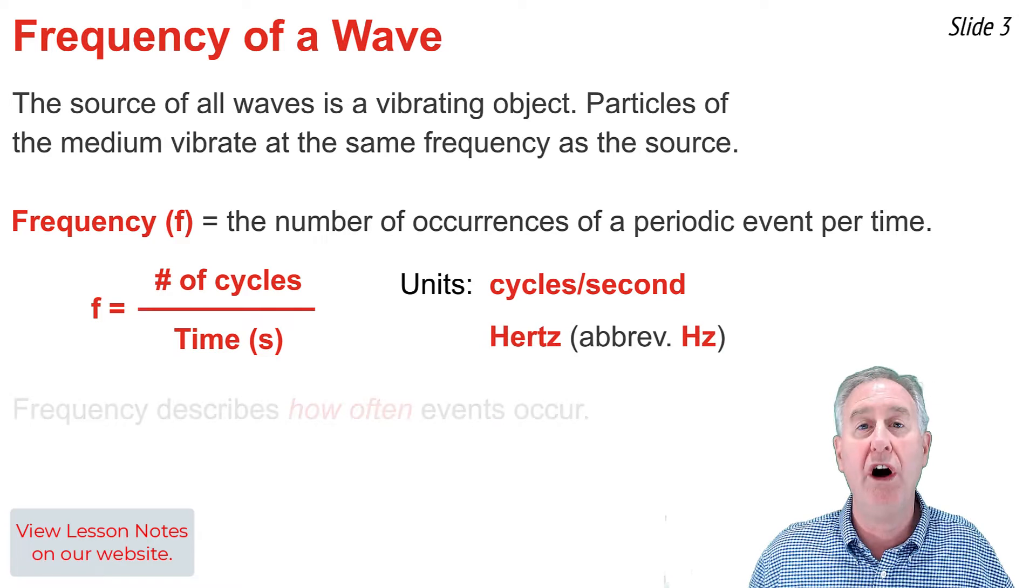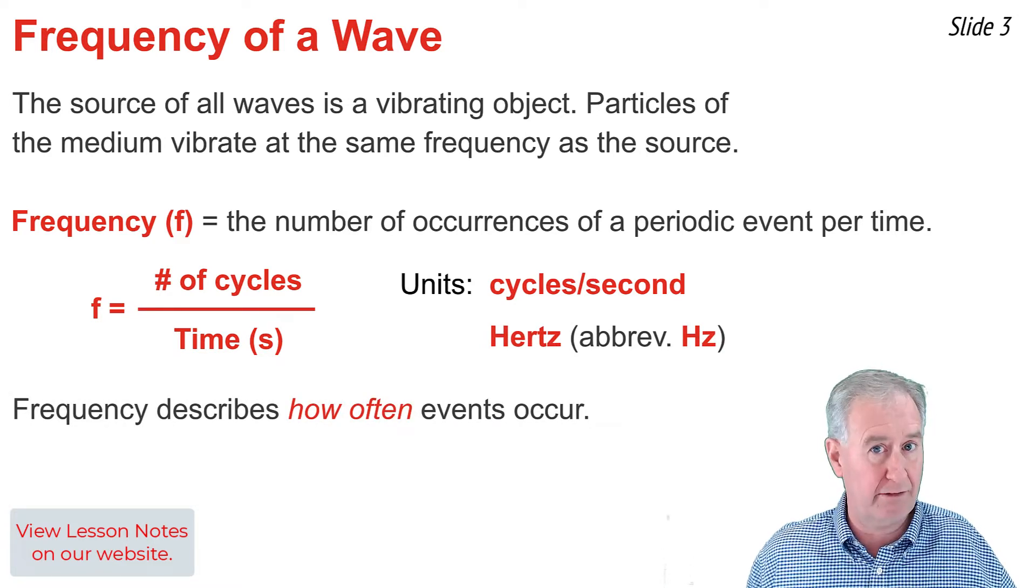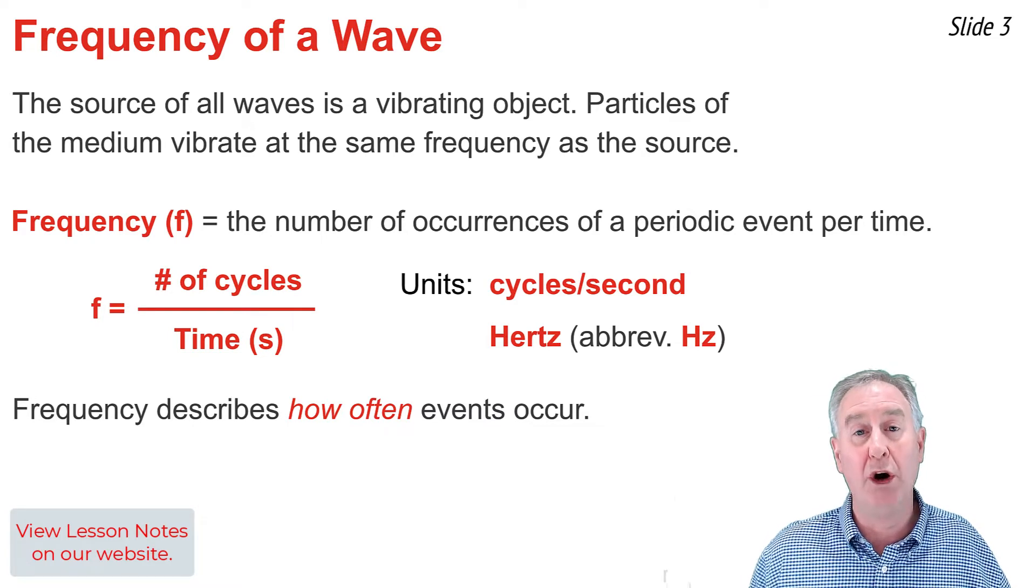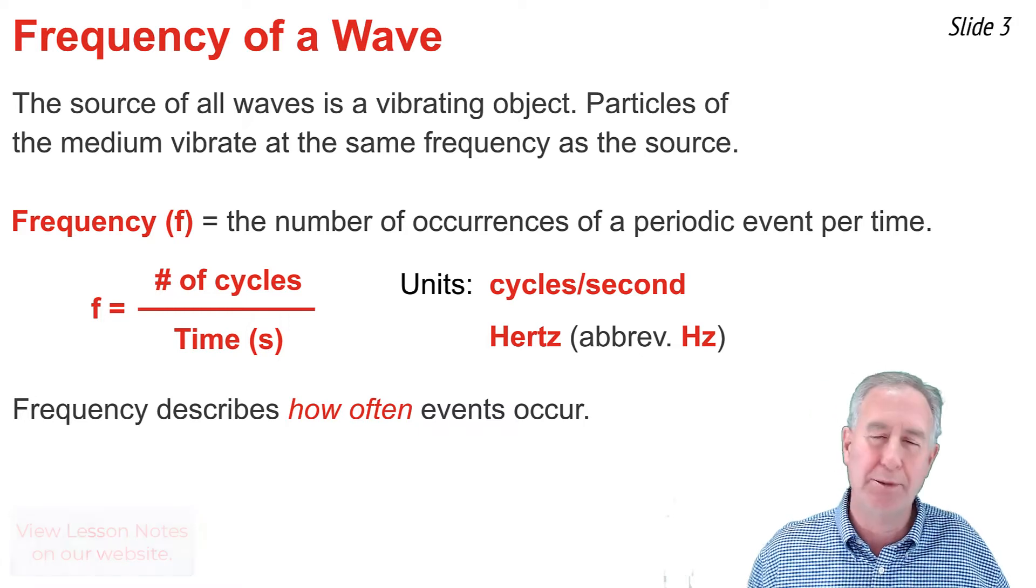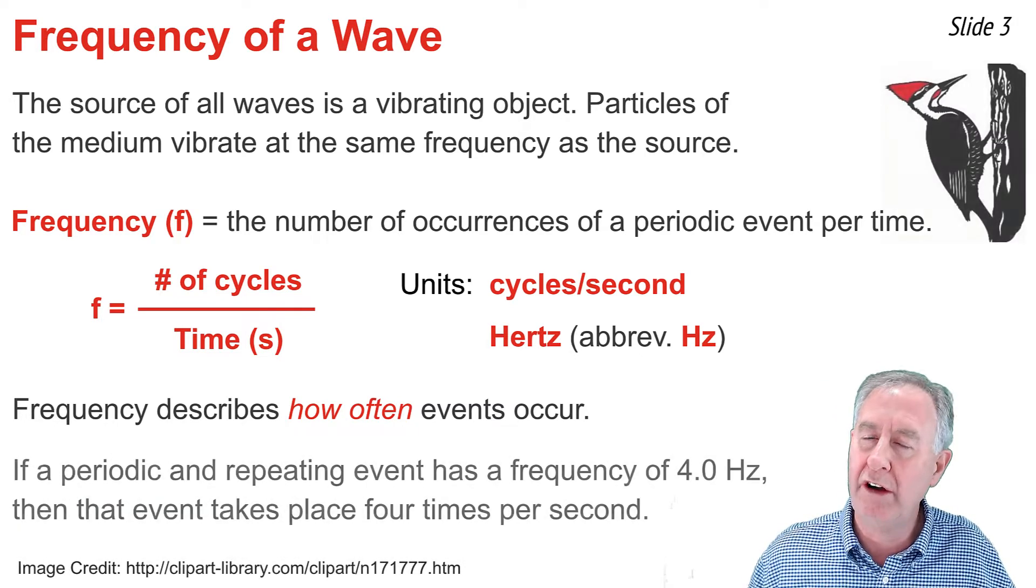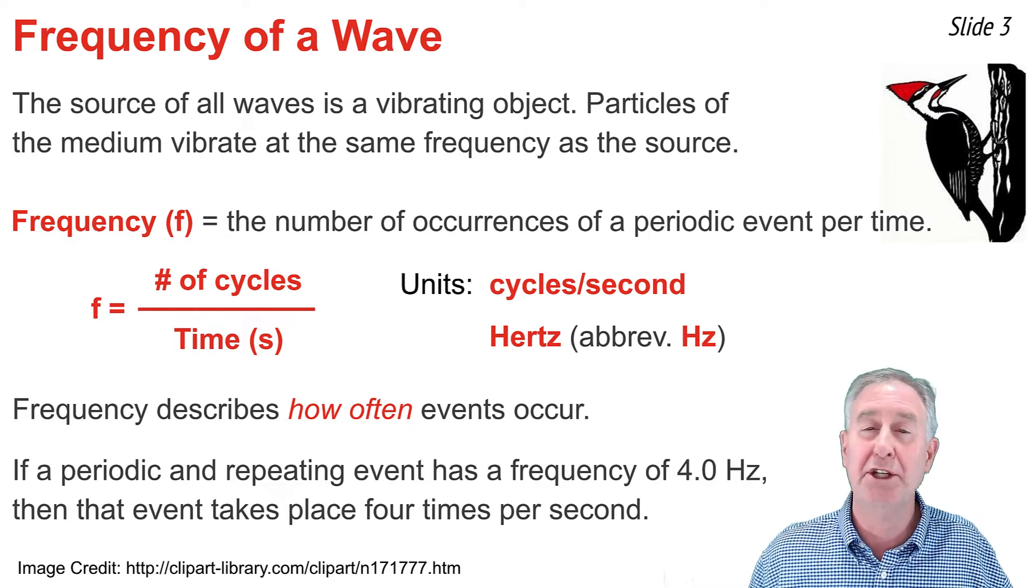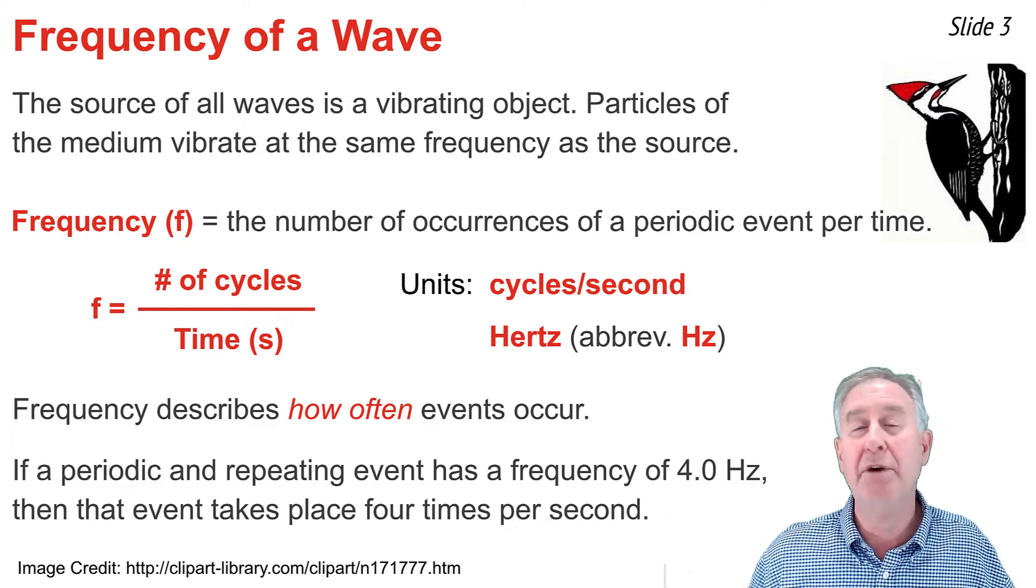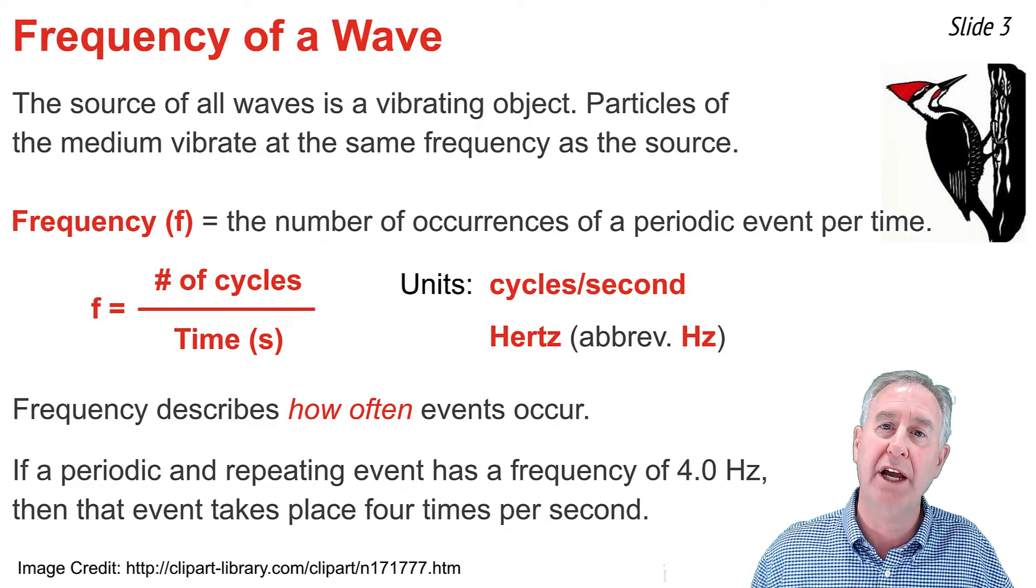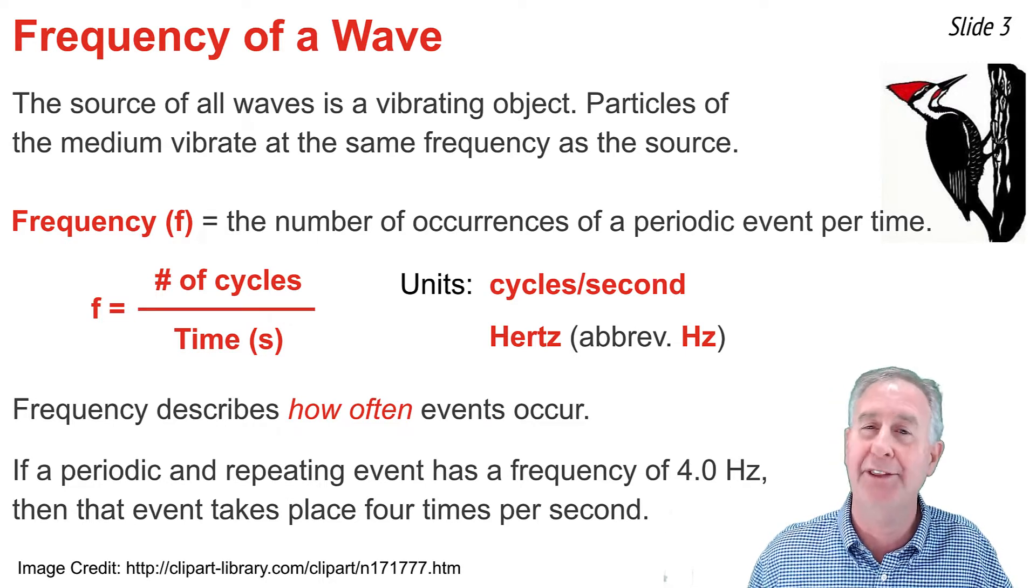Frequency describes how often something happens, how often the coils of the slinky are vibrating back and forth. It also describes how often a crest of a wave passes by a point in some amount of time. Frequency describes how often any periodic event takes place. The event that takes place quite often in my backyard is the woodpecker wrapping on the tree. He wraps on that tree four times per second at four hertz. That means he completes one complete cycle of wrapping on that tree four times every second.